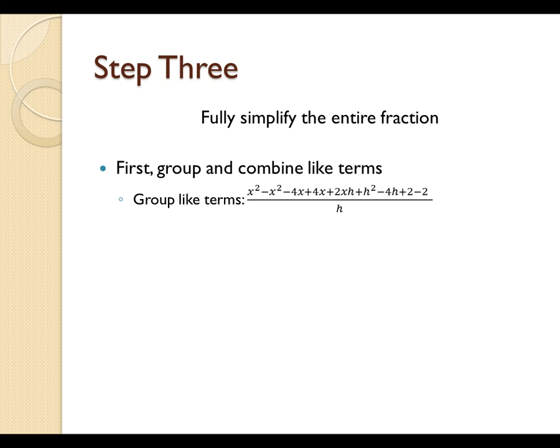And in this case, we see that the x squareds cancel, the 4x's cancel, and the 2's cancel, which in turn is going to leave us with 2xh plus h squared minus 4h all over h.